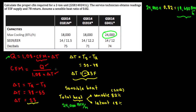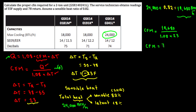Now that we have the sensible heat, we plug it into the formula. CFM equals sensible heat which is 19,680 divided by 1.08 times delta T. Delta T is 23 degrees. So CFM equals 792. For proper cooling, we need 792 CFM for this two-ton unit.